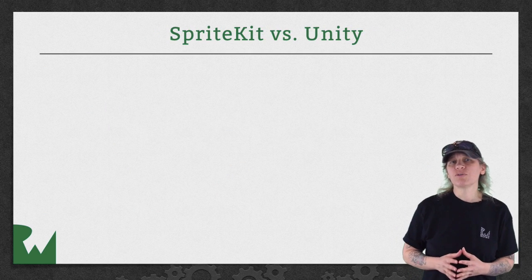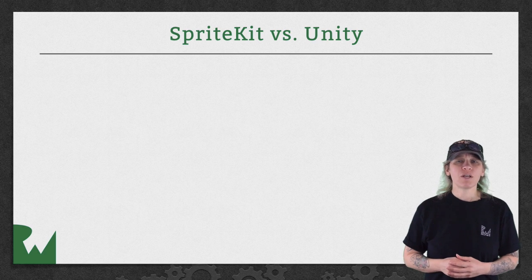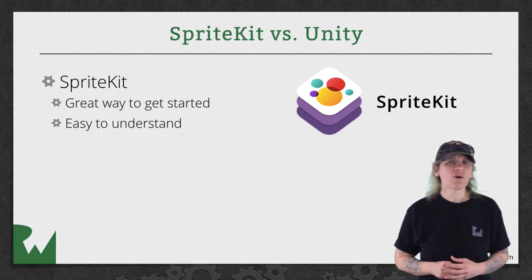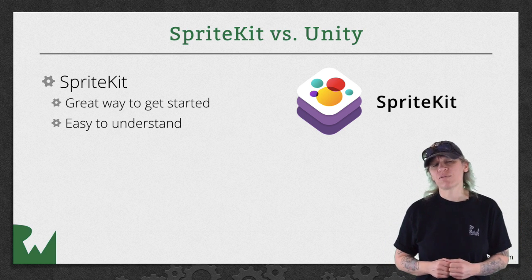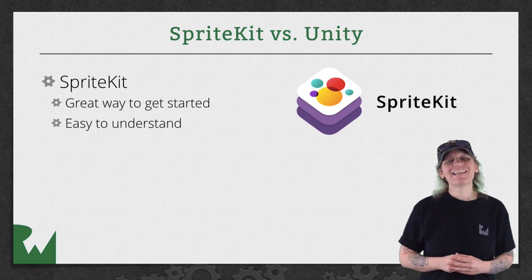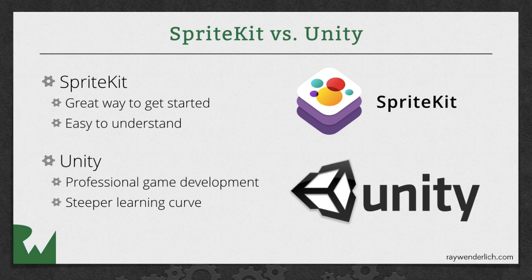So why would you choose to use Sprite Kit as opposed to something like Unity? Well, to be honest, Sprite Kit is a great way to get started with making games for the Apple platforms. It's relatively easy to understand, especially if you're already familiar with Swift and iOS development. So what about Unity? That's a good question — I'm glad I asked it. Unity is what we recommend when you want to get more serious about game development. It's not that Sprite Kit isn't for serious game developers; it's just that Unity is much more powerful than Sprite Kit and it's what many of the professional game companies use when they're creating games.